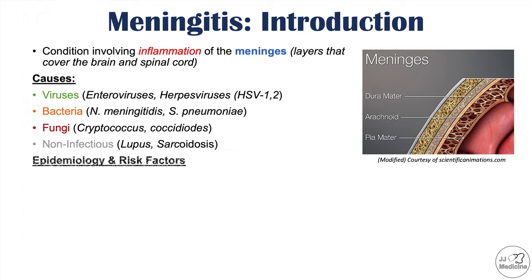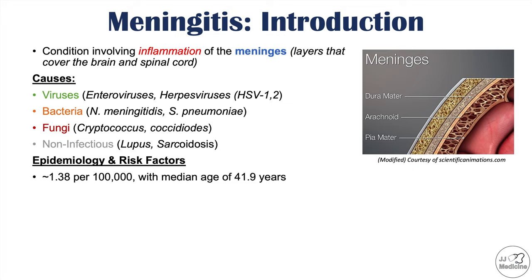What is the epidemiology and risk factors for getting meningitis? The epidemiology shows that 1.38 per 100,000 people are affected by meningitis with a median age of 41.9 years, and these numbers are from the United States.